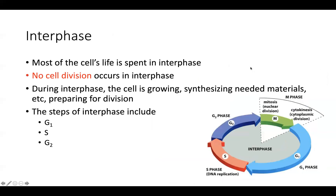Interphase is the longest phase of the cell cycle. Most of the cell's life is spent in interphase. When you think interphase, just think preparation. Everything is happening at interphase, but one thing is not happening during interphase — there is no cell division occurring. What is happening is that the cell is preparing: it's growing, synthesizing the needed materials, enzymes, etc. That's what's happening from G1, S, and G2 — it's preparing for division.